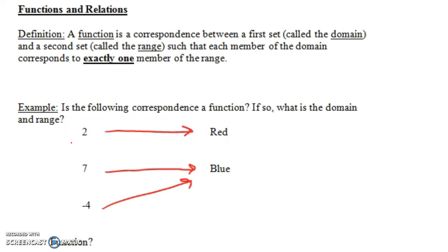Now is it true that each member of the first set corresponds to exactly one member of the range? Yes. Notice that 2 corresponds to one thing, 7 corresponds to one thing, and minus 4 corresponds to one thing. So this is a function.